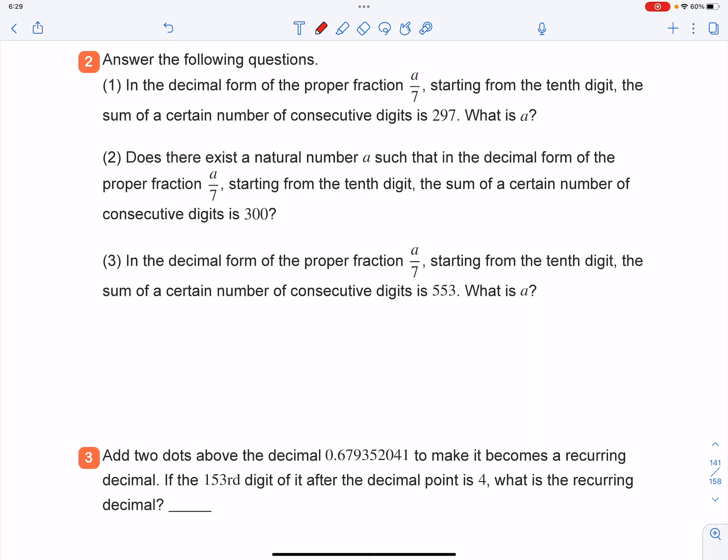Extensive access is question number 2 of lesson 8. Answer the following questions. In the decimal form of the proper fraction 8 over 7, starting from the 10th digit, the sum of a certain number of consecutive digits is 297. What is A?